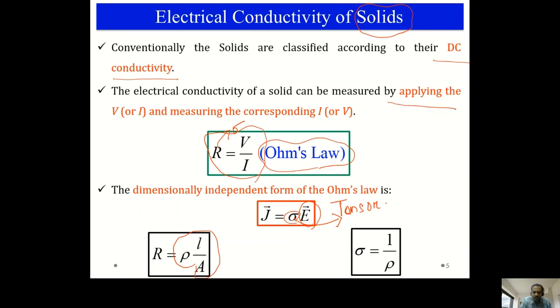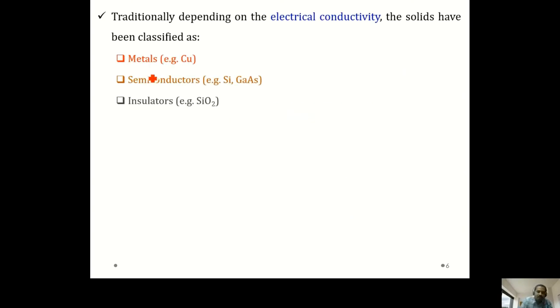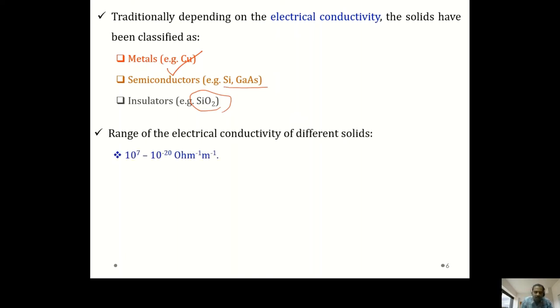By measuring voltage or current we can find the conductivity of a sample. Solids can be classified into metals, insulators, and semiconductors — examples include copper (metal), silicon and gallium arsenide (semiconductors), and quartz/silica SiO₂ (insulator). Looking at the wide variety of solids, the best conductors have a conductivity of the order of 10^7 ohm⁻¹ m⁻¹ and the best insulators have a conductivity of the order of 10^−20 ohm⁻¹ m⁻¹, giving an overall range of about 10^27.